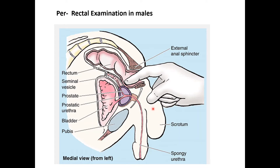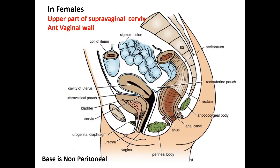The close anatomical relationship between the male internal reproductive structures and the rectum is clinically utilized during per-rectal examination, allowing palpation of the prostate as well as a pathological seminal vesicle.